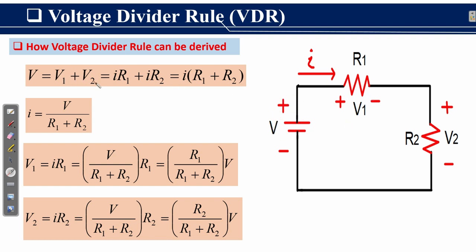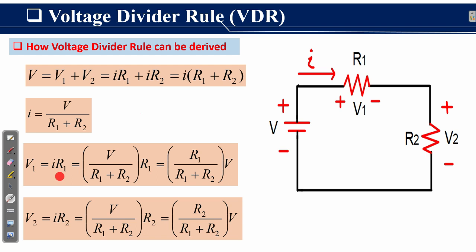V is the voltage rise and V1, V2 are the voltage drops in the closed loop. According to Ohm's Law, V1 equals I times R1 and V2 equals I times R2. Taking I as common, the current I is obtained as: I equals V over R1 plus R2. We know that V1 equals I times R1, so substituting I gives V1 equals V over R1 plus R2, times R1, which equals R1 over R1 plus R2, times V.